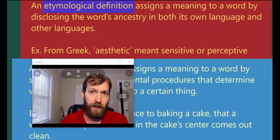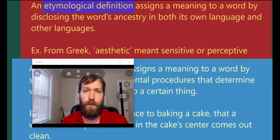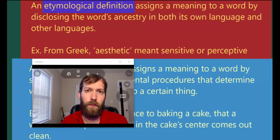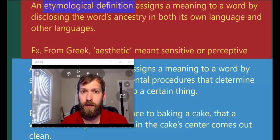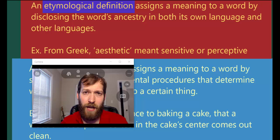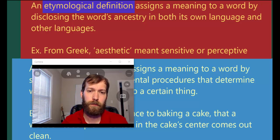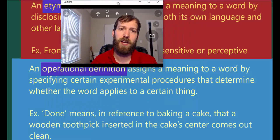Or take the example of 'philosophy,' also originating with the Greeks. 'Philo' or 'philia' means love, and 'sophia' means wisdom. So 'philosophy' — its etymological meaning, and in fact its very deep meaning — is the love of wisdom. That concludes etymological definitions.